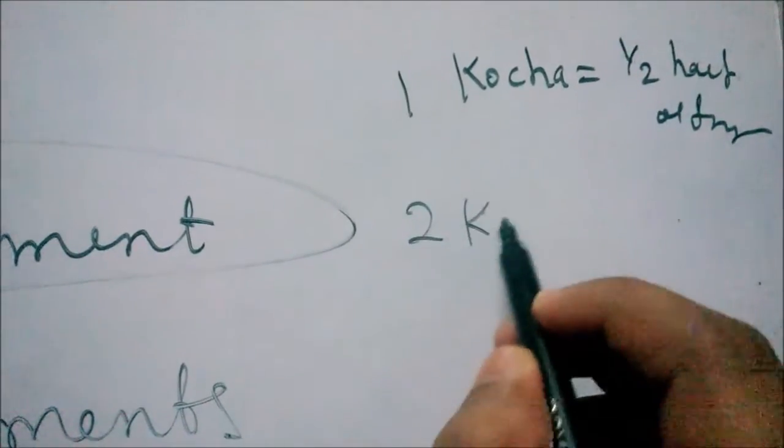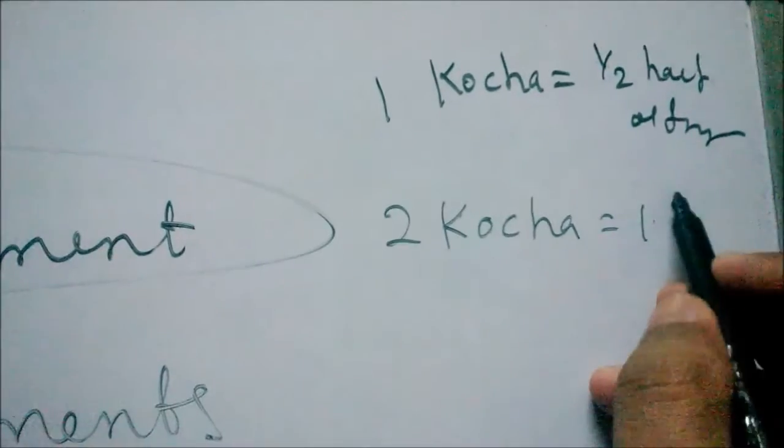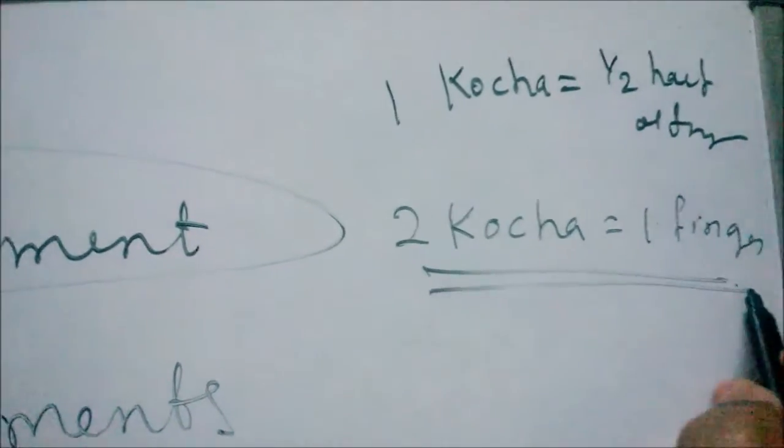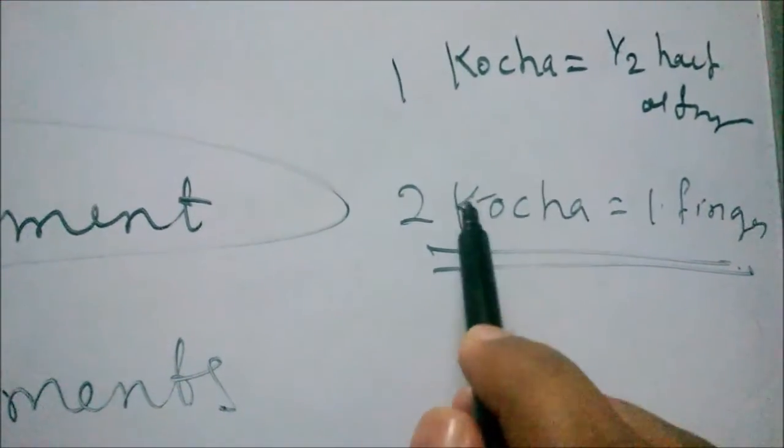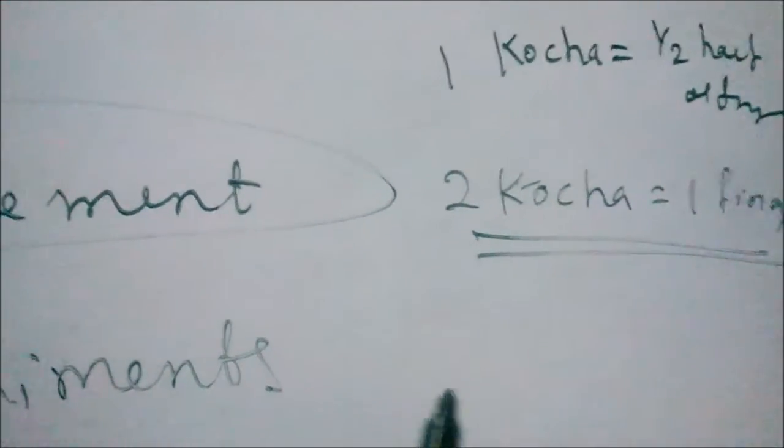So two kocha is equal to one finger of my finger. I could measure anything with the help of this system, and to make it less confusing I can just say kocha.